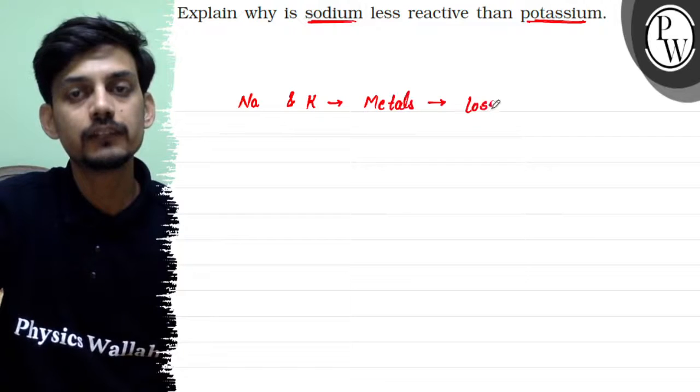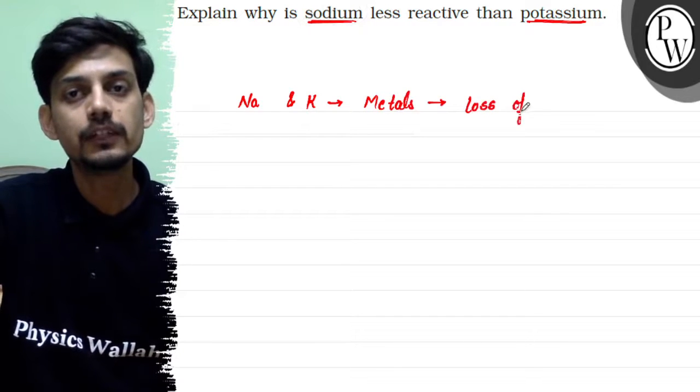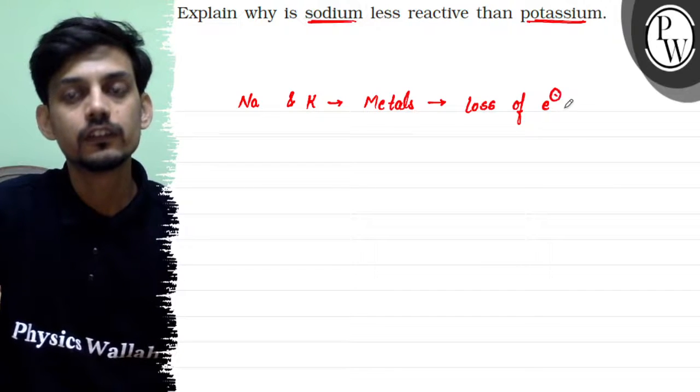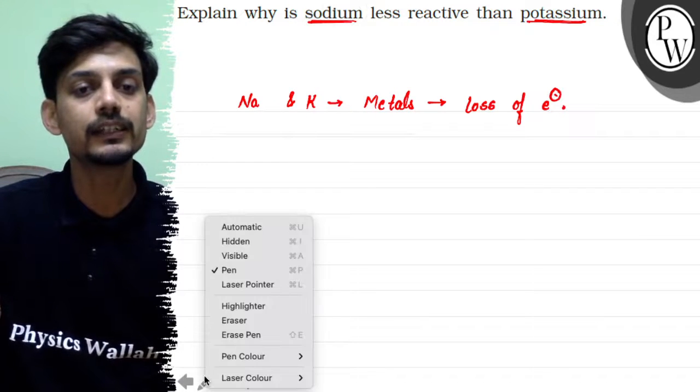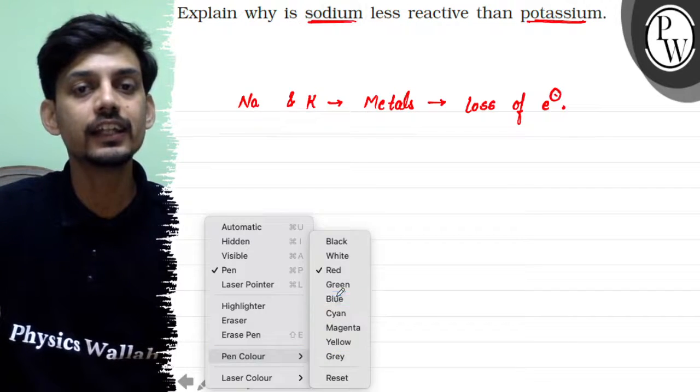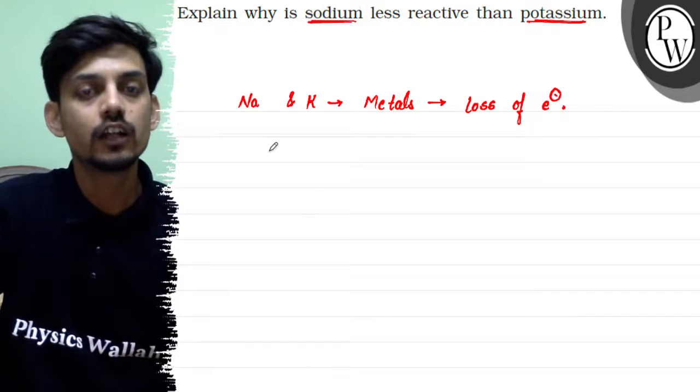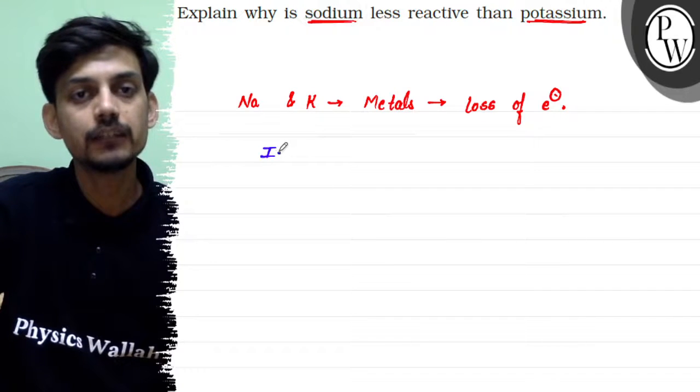Usually metals are able to lose some electrons, so sodium and potassium ki reactivity bhi is baat se compare kar sakte hain ki in mein aasani se electron lose ho sakta hai. So agar baat karein ionization enthalpy, that is the tendency to lose electron.